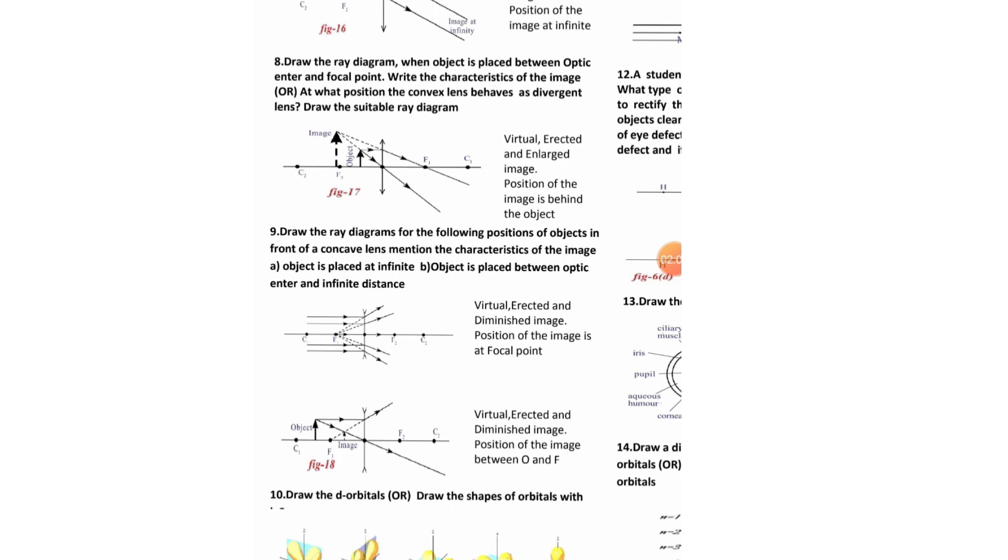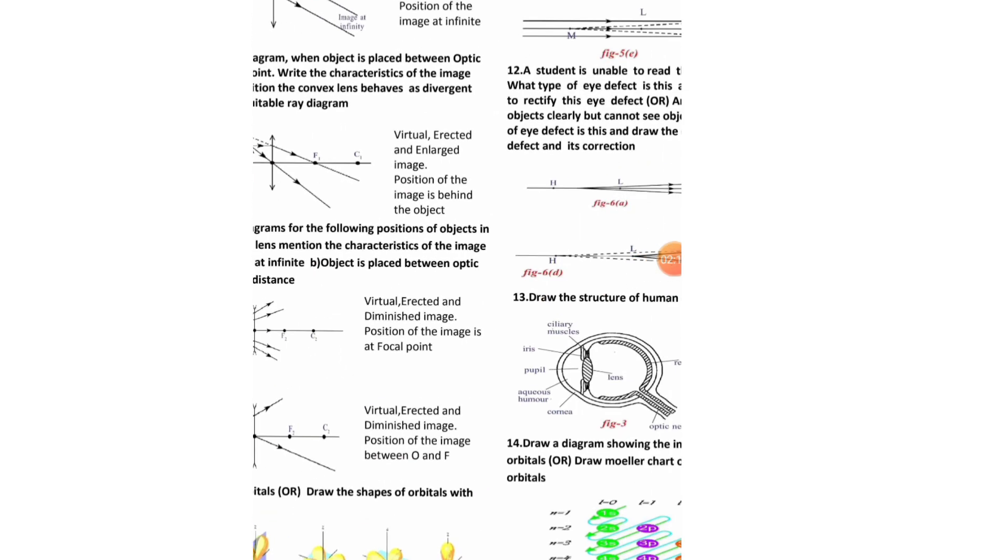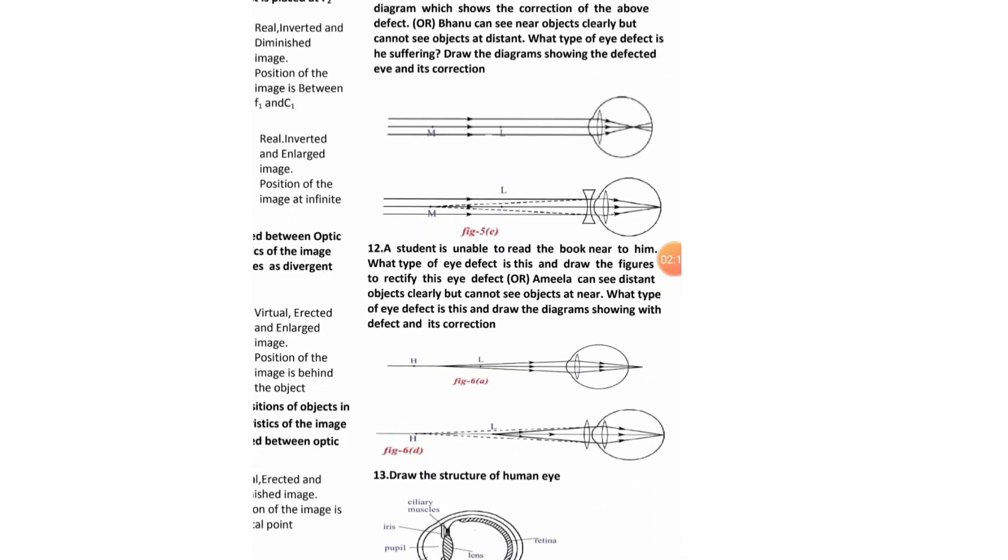Draw the diagram for the following position of the object in front of concave lens. Next, D-orbital diagram is given. Draw the shape of orbitals with the diagram. Next, here Sridhar is having difficulty in reading a blackboard while sitting in the last row. What could be the defect of the child? General question is given. Optics. What is the defect in his eye?